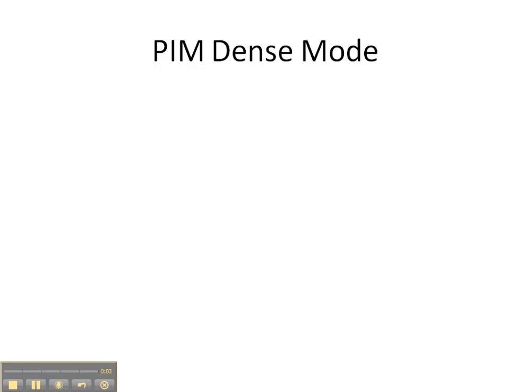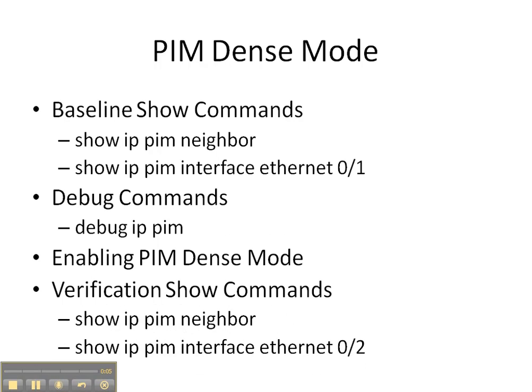In this video cheat sheet, we're going to configure PIM dense mode on our network. We'll start with the baseline show commands of 'show ip pim neighbor' and 'show ip pim interface' to see if PIM dense mode has already been configured. Then we'll enable the 'debug ip pim' command to see how things unfold as we enable PIM dense mode, and finish with verification show commands to see how things have changed.